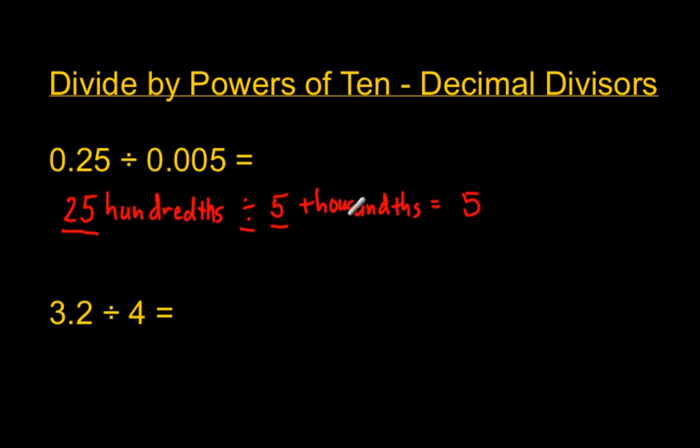And then hundredths divided by thousandths. You're asking yourself, how many thousandths are there in a hundredth? And there are ten thousandths in a hundredth. So therefore, the answer to this problem is 10. So 10 is represented by one zero.